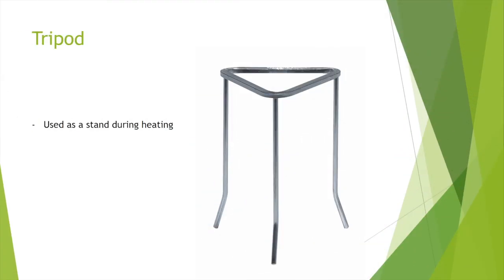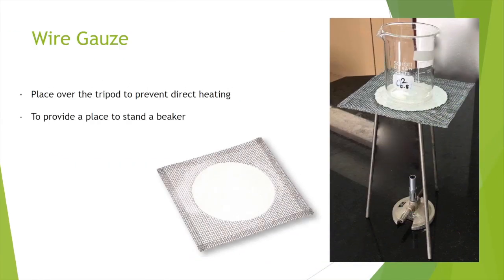This is a tripod. It serves as a stand for the beakers during the heating process. This is a wire gauze. It distributes the heat evenly to the beaker. The picture on the right shows the correct arrangement of the Bunsen burner, tripod, wire gauze, and beaker when we need to heat things up.